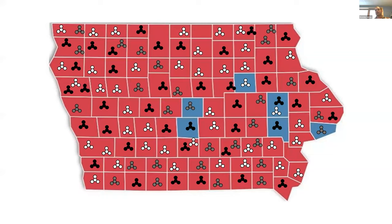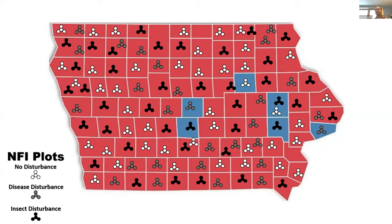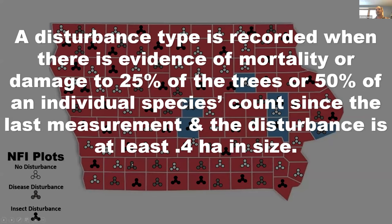We were also interested in the disturbance types that affect that sequestration. Under the NFI, usually two or three plots per county record disturbance types. A disturbance is recorded only when there's evidence of mortality or damage to 25% of trees or 50% of an individual species count since the last measurement, and the disturbance is at least 0.4 hectares. We compared no-disturbance plots against disease-disturbed and insect-disturbed plots over the most recent remeasurement interval, spanning roughly 2001 to 2019.